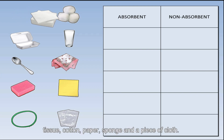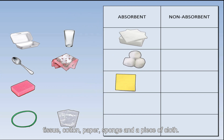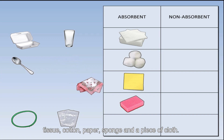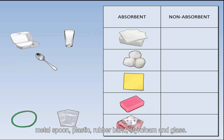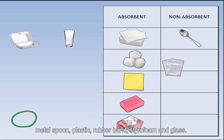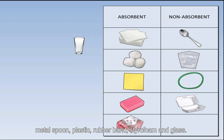Materials that absorb water: tissue, cotton, paper, sponge, and a piece of cloth. Materials that do not absorb water: metal spoon, plastic, rubber band, styrofoam, and glass.